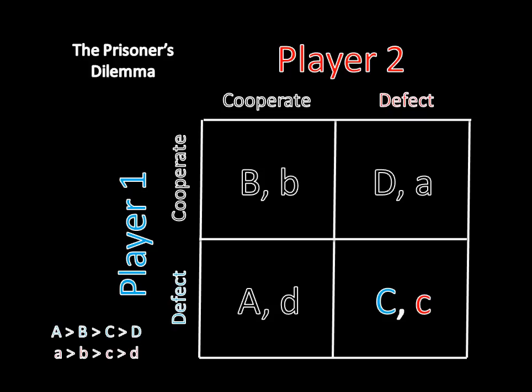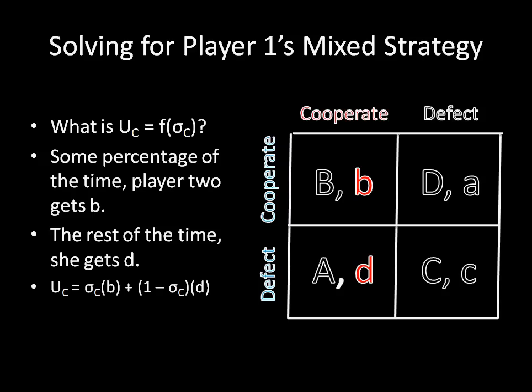But let's just make sure that there isn't some sort of mixed strategy Nash equilibrium here as well. So to do that, we need to find the mixed strategy algorithm. And we start by defining what the utility of cooperating for player 2 is as a function of some mixed strategy of player 1's. Well, some percentage of the time player 2 gets B, and the rest of the time she gets D. And I've noted that here mathematically in the last bullet point.